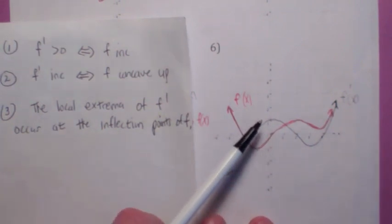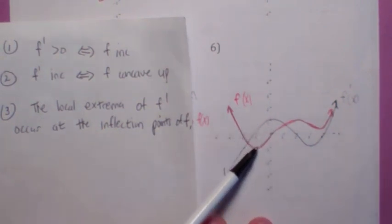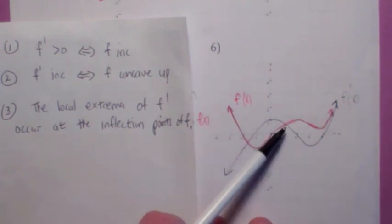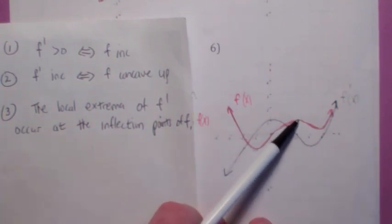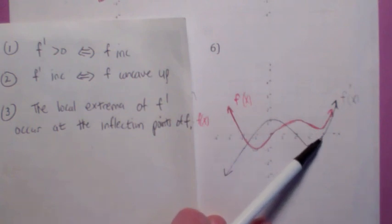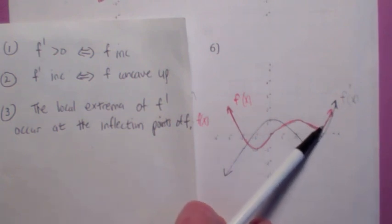Okay, I got this for number 6. Notice f prime goes from negative to positive, so f has to have a local min. f prime goes from positive to negative, f has to have a local max. f prime goes from negative to positive, f has to have a local min.